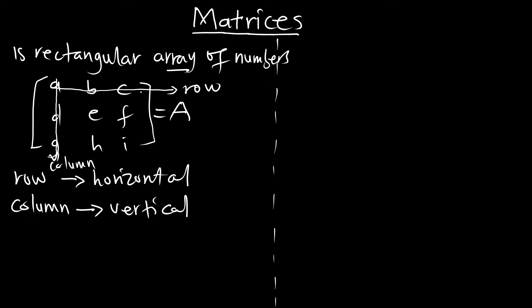Now we know what a row and a column mean. In matrix A, how many columns and how many rows do we have? We have row one, row two, and row three — so the number of rows is three. And for columns: column one, column two, and column three — also three. So this matrix has three rows and three columns.